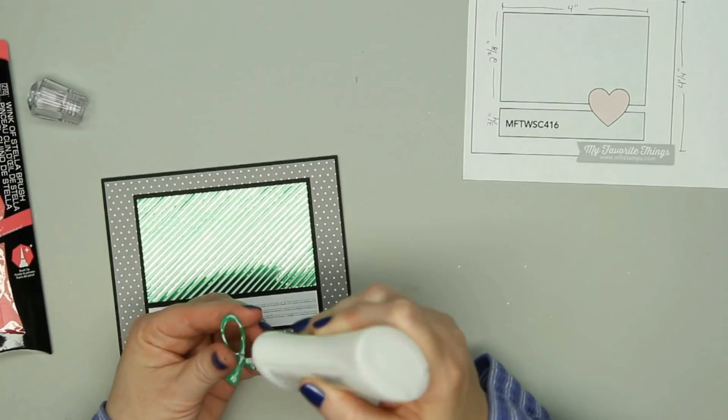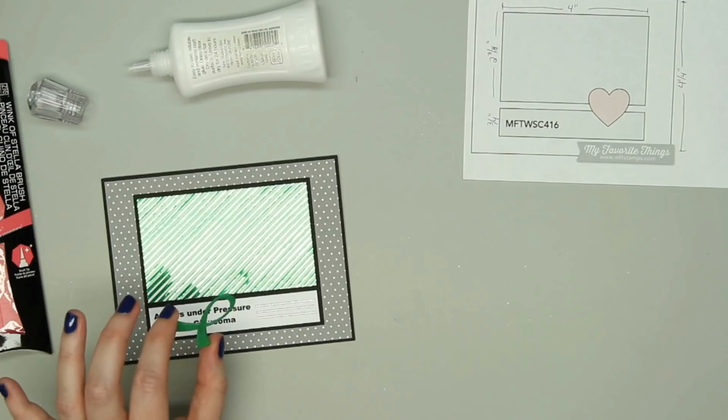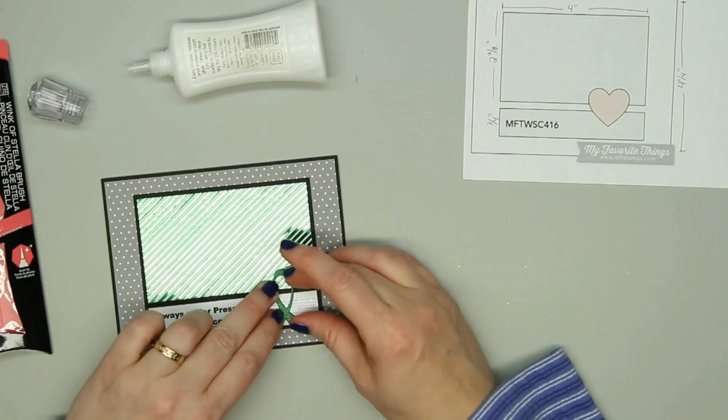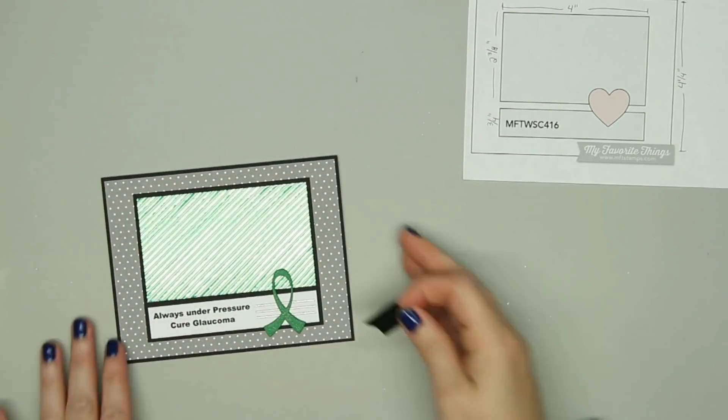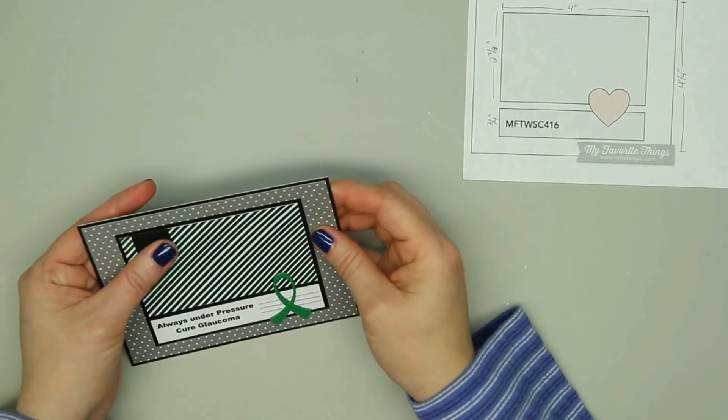I just add some liquid adhesive to the back of that. I did get a little extra glue in the bottom of the ribbon so I just wiped that away, and then I adhered that right on top of those three silver peel offs.